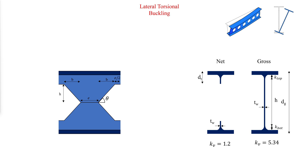Lateral torsional buckling, flange local buckling, and tension flange yielding should be checked in castellated and cellular beams in accordance with AISC specification Chapter F, sections F2 through F5, similar to ordinary wide flange beams. The gross section properties can be used when checking for lateral torsional buckling. To learn how to use AISC specification Chapter F, please watch the video shown in the card at the end of this video.